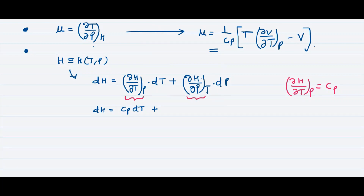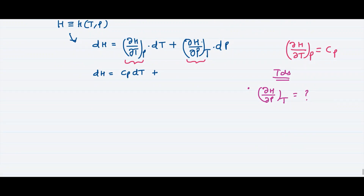For the term (∂H/∂P) at constant temperature, we will look for help from the TdS equation. Starting from the basic equation H equals U plus PV, we differentiate throughout to get dH equal to dU plus P dV plus V dP.